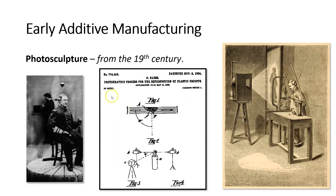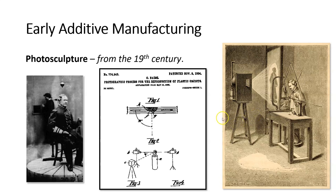This is a page from the patent of that process — the photographic process for the reproduction of plastic objects. You can see an example right here: a live person who looks like a Civil War general. The object is used to hold his head still, a plumb bob is used to align him, and he's on a table that rotates. On the right-hand side, you can see the person making the plastic sculpture.